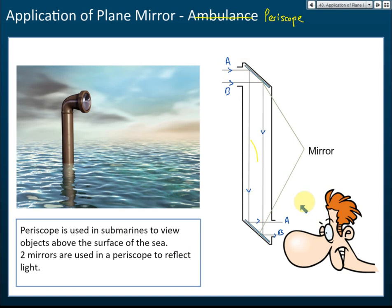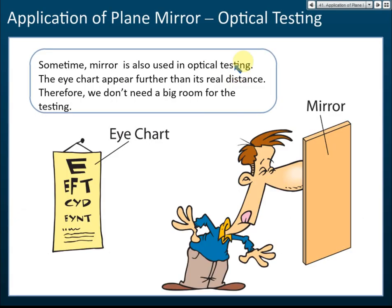Another application is optical testing. If the room is too small and there is not enough distance for an eye test, a mirror can be used. The eye chart is placed at the back of the room and a mirror is placed in front, effectively increasing the apparent distance from the observer to the chart. For example, if the eye chart is 10 metres from the mirror and the observer is 7 metres from the mirror...